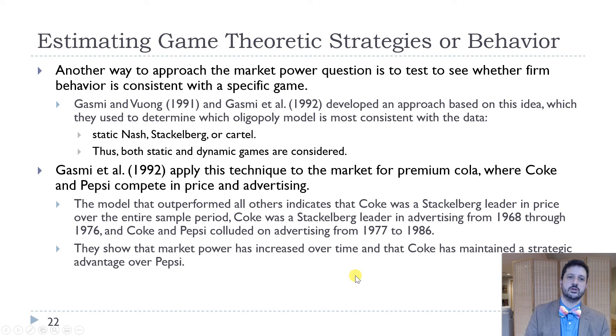We can also think about whether or not firm behavior is consistent with a specific game, a static Nash game with either Cournot or Bertrand, Stackelberg or Cartel, and see if they're behaving in the same way. Gasmi et al in 1992 did this for premium cola, so Coke and Pepsi basically. What they found comparing all these different types of models was that the Stackelberg model fit best, where Coke was a Stackelberg leader in price over the entire sample period in advertising from 1968 through 1976, and that they colluded on advertising from 1977 to 1986. They also showed that market power increased over time and that Coke tended to have more market power than Pepsi did, so they had a strategic advantage there.